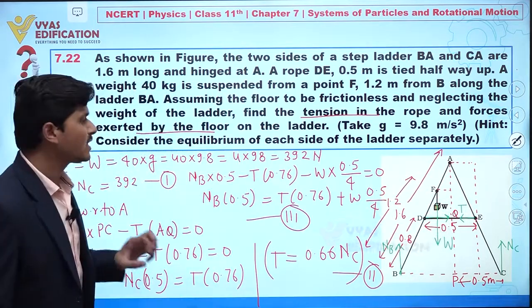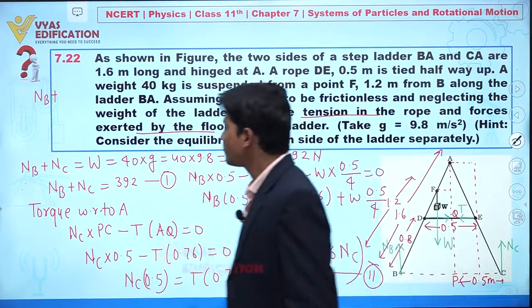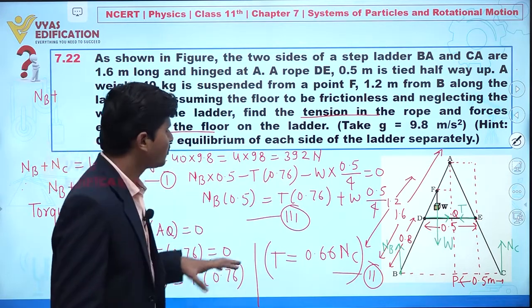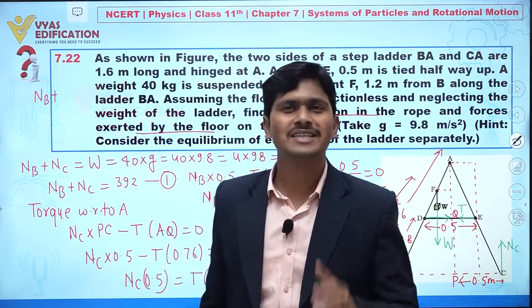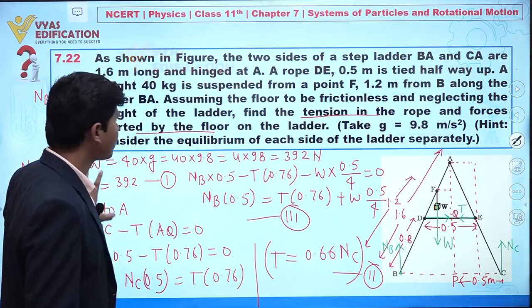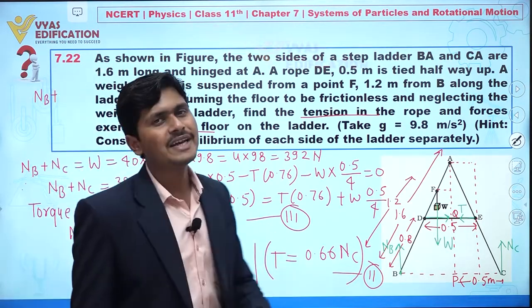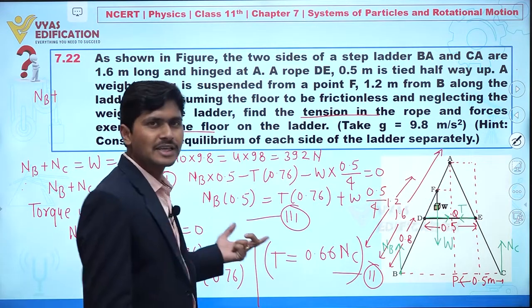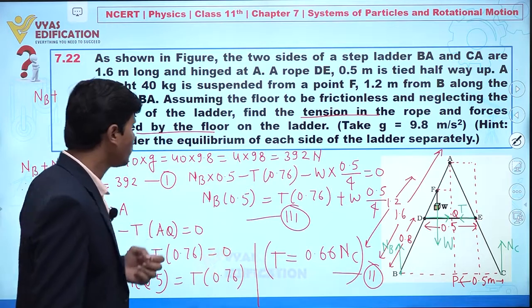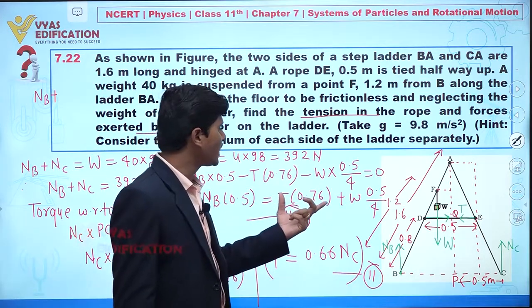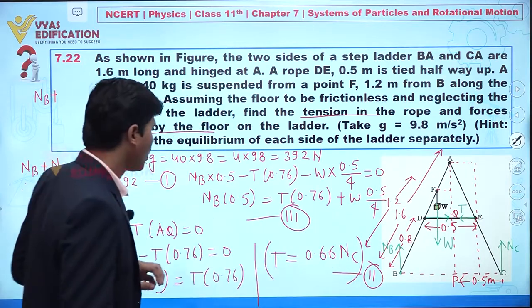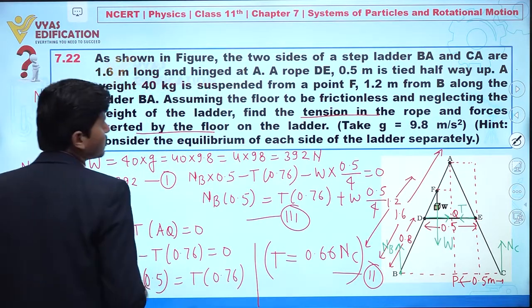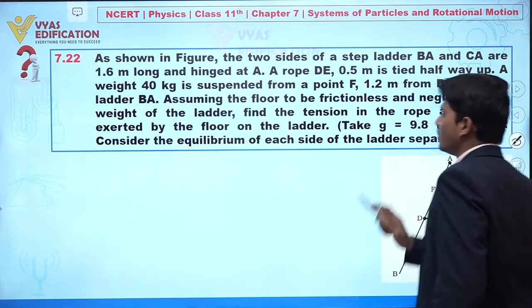We have three variables: NB, NC, and tension T. W is already known. We have three equations: NB + NC = 392; NB × 0.5 = T × 0.76 + W × 0.5/4; and T = 0.66 × NC. So we can solve for all three unknowns.